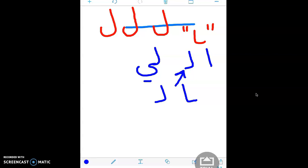So this LAM is going to connect. It's going to look similar to an ALIF but know that the ALIF is different because what does ALIF not do? It does not connect to what comes after it. So if you see something that is connected like this, that is an ALIF. But if you see something that's connected like this, connected to something to the left side, that is going to be a LAM.